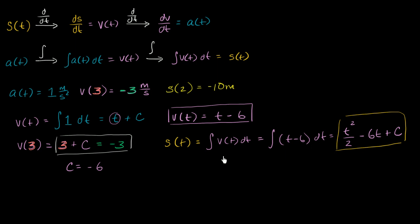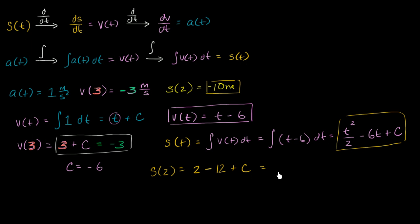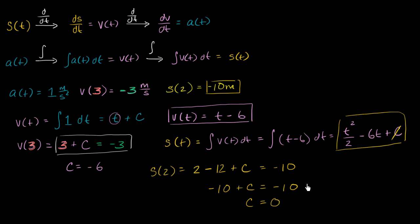The antiderivative of t is t squared over two, and the antiderivative of negative six is negative six t, plus a constant c. So s(2) is equal to two squared over two — that's four over two, which is two — minus six times two, so minus 12, plus c, equals negative 10. We get two minus 12 is negative 10 plus c equals negative 10. Adding 10 to both sides, c is equal to zero. So the c right over here is just zero.